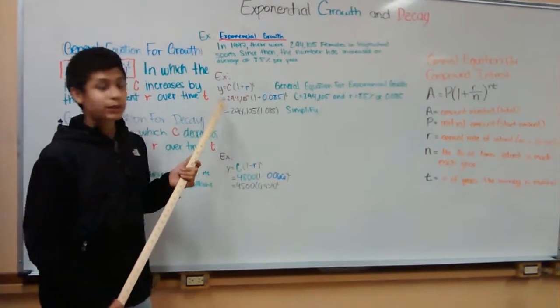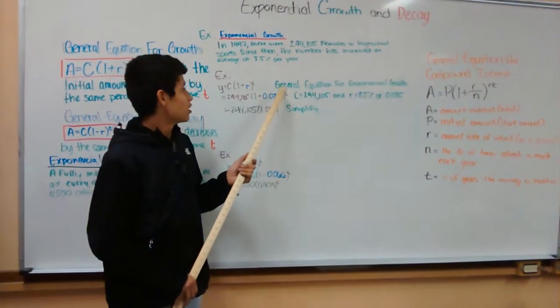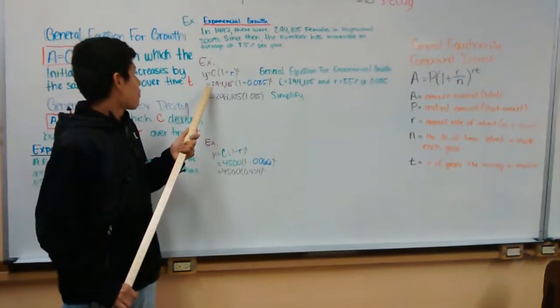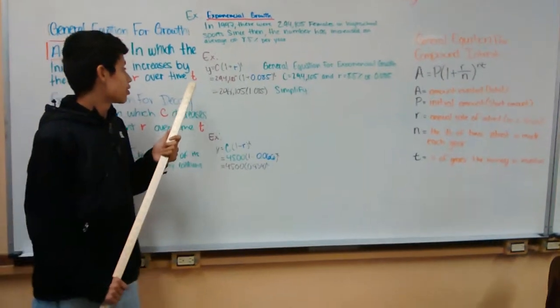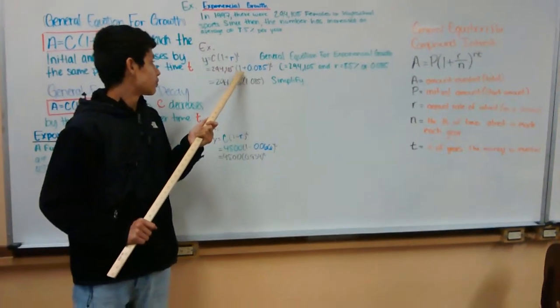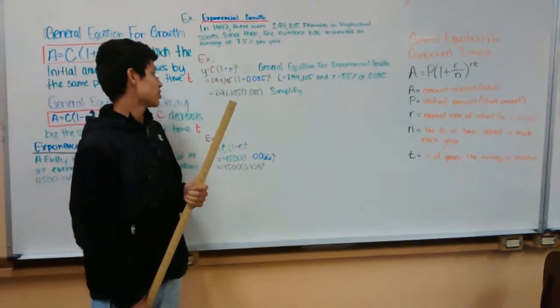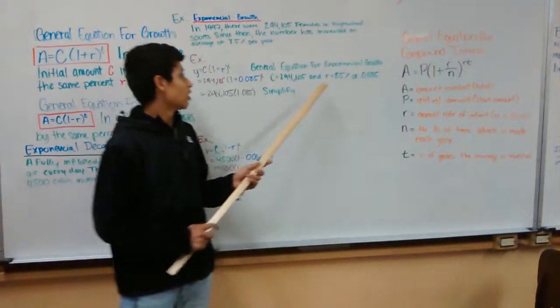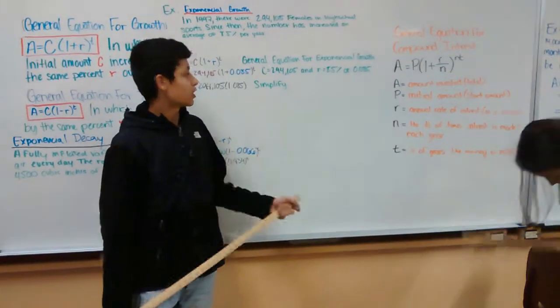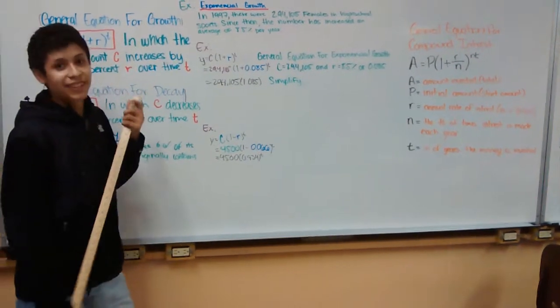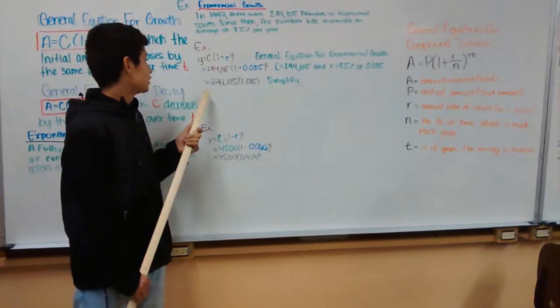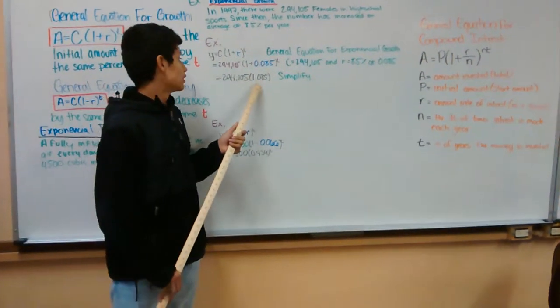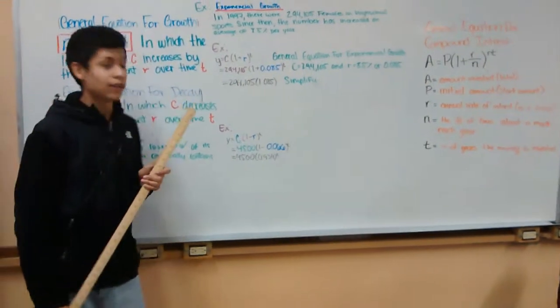Example: y equals C times one plus r to the power of t. This is a general equation for exponential growth. So we have 294,105 times one plus 0.085 to the power of t, where C equals 294,105 and r equals 8.5 percent or 0.085. To simplify it, it will just be 294,105 times 1.085 to the power of t.